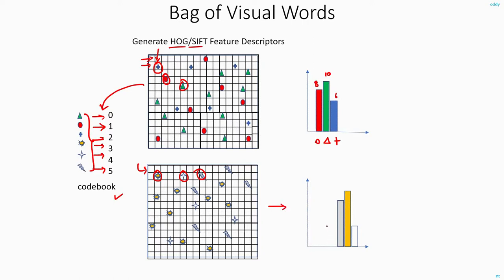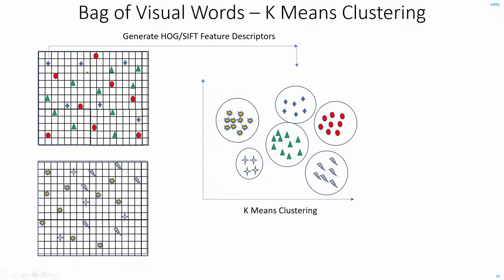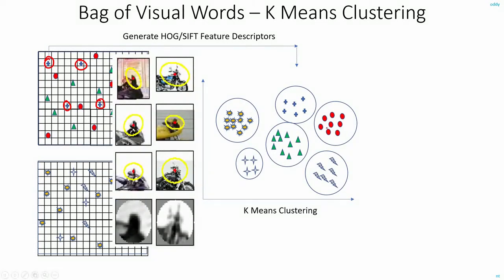Now let's see how we can actually create this codebook. Please note that though in the image most of the plus symbols look similar to each other, in reality they will all be slightly different. To identify the features, you can use k-means clustering. Once you do the clustering, all the features that are very similar to each other will fall into the same group. I'll have the plus symbols in one group, circles in one group, and triangles, stars, lightning and blast all in their own separate groups. This is how I'll be able to create the codebook.